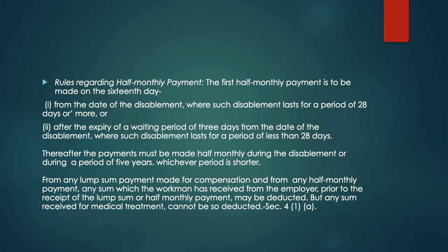Regarding rules for half monthly payment: the first half monthly payment is to be made on the 16th day from the date of disablement where such disablement lasts for a period of 28 days or more, or on the 16th day after the expiry of a waiting period of 3 days from the date of disablement where such disablement lasts for a period of less than 28 days.